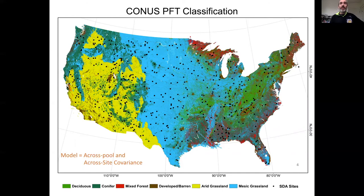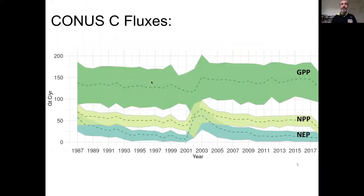We are now operating this at a 500-point assimilation across the contiguous U.S. for four PFTs: deciduous, conifer, grassland, and mesic shrubland. Once we've done that 500-point data assimilation, we're able to upscale this to CONUS-scale estimates of carbon pools and fluxes.